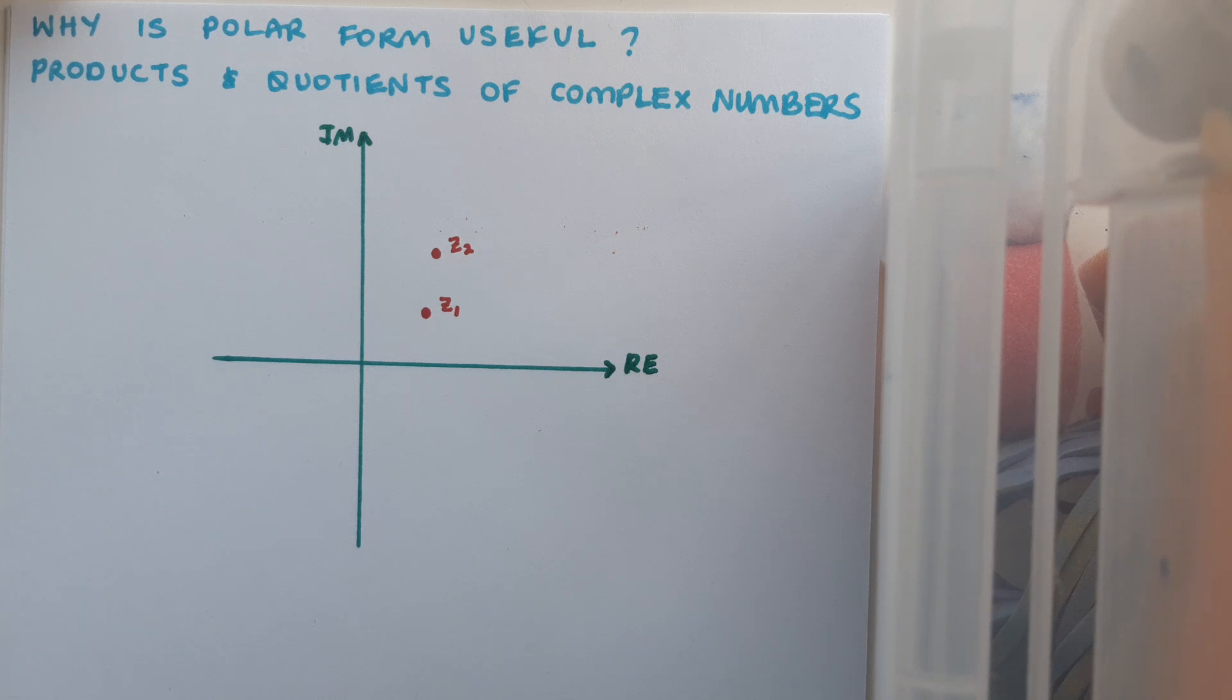But polar form is actually a much more intuitive way of doing this, because as we saw previously, the effect of multiplying two complex numbers together was to combine their moduli in some way and also to affect the rotation of the resulting complex number from the positive sense of the real axis.